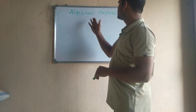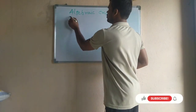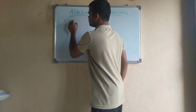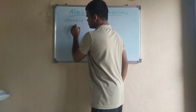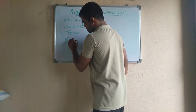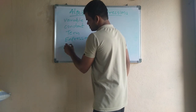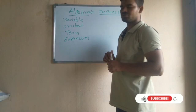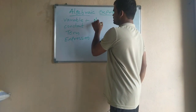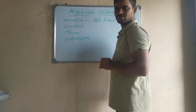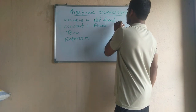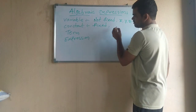Hello students, today we are going to learn algebraic expressions and its operations. For that, first we need to know the variable and constant. A variable is nothing but which does not have a fixed value, and which has a fixed value is called a constant. Examples of variables are x, y, z, and examples of constants are 1, 2, 3, and so on.